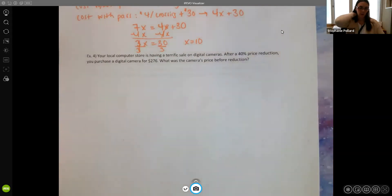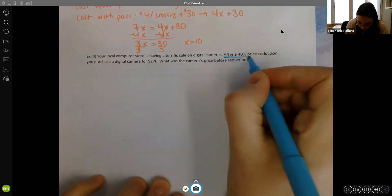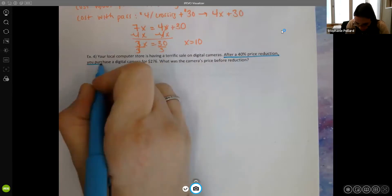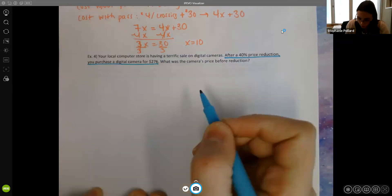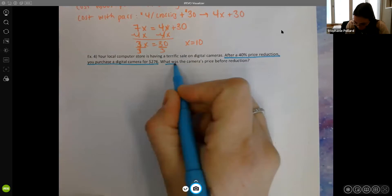Okay, so another example, again, different style here. So I'm trying to just show you a few different styles with your text. It says your local computer store is having a terrific sale on digital cameras. After a 40% price reduction, you purchase a digital camera for $276. What was the camera's price before reduction?